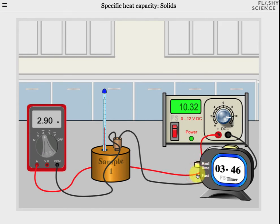Now the sample is shown to be sample one, but there are in fact six materials to choose from in this experiment. To choose one of these, first remember safety first, turn off the power supply by pressing the power switch and then click on the sample.